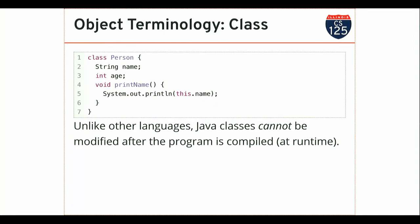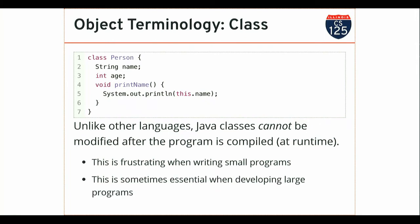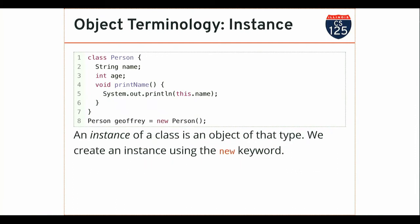So once the program starts to run, if you suddenly decide that a Person needs to have a weight field too — no dice. You can't do it. You have to go back, add that field to your Person class, recompile your code, and then distribute the program again. There's no way to do this at runtime. You may find this annoying when working on smaller programs, but this ends up being a huge benefit when you're building complex applications storing lots of data and working with many other people.